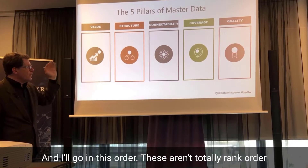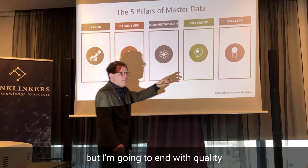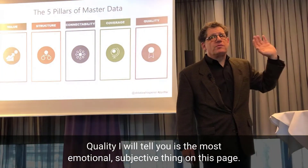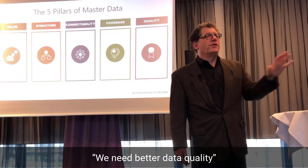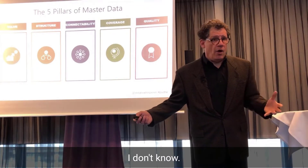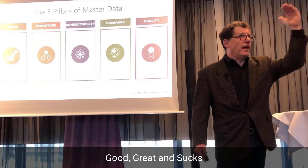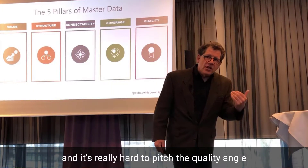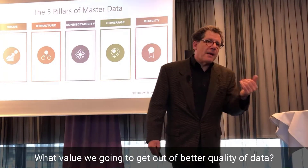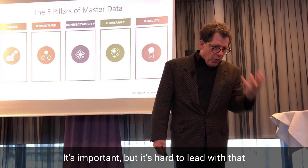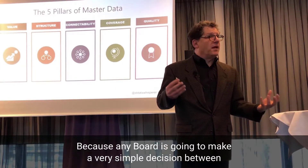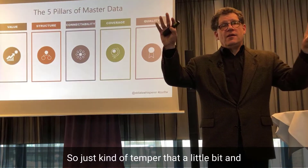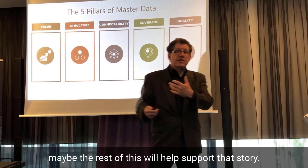I'll go in this order, and these aren't totally rank order, but I'm going to end with quality because that's where most people start. And quality, I will tell you, is the most emotional, subjective thing on this page. We need better data quality — what does that mean? I've seen three kinds of data quality: good, great, and sucks. It's really hard to pitch the quality angle. It's important, but it's hard to lead with that because any board is going to make a very simple decision between should we improve our data quality or our product quality? So just temper that a little bit, and maybe the rest of this will help support that story.